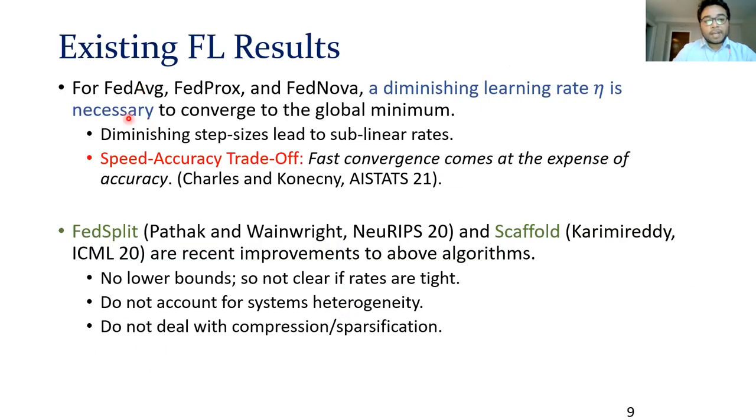To quickly sum up, for algorithms like FedAvg and improvements thereof, such as FedProx and FedNova, it turns out that having a diminishing learning rate is necessary to converge to the global minimum. But as soon as you have a diminishing learning rate, you can only get sublinear convergence. For algorithms like FedSplit and Scaffold, there are no known lower bounds, so we don't know if the rates in these papers are tight. Moreover, they don't account for systems heterogeneity, compression, or sparsification.